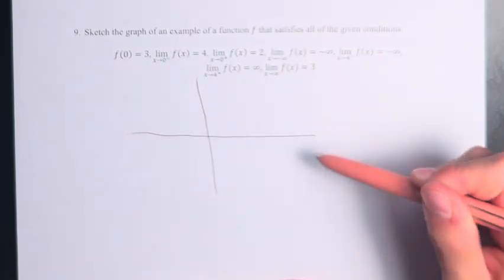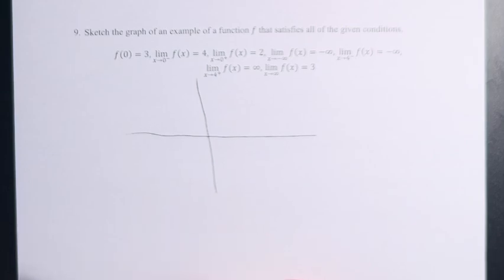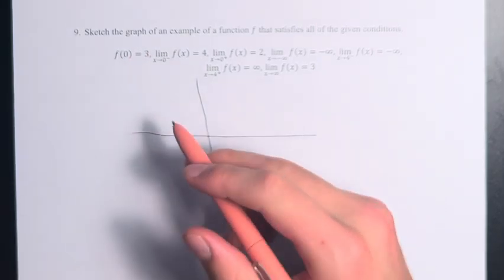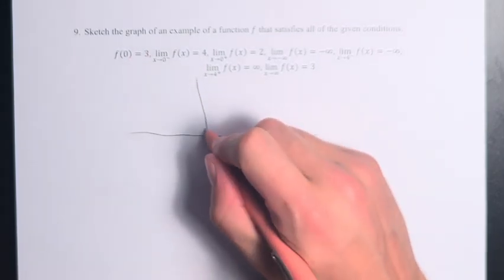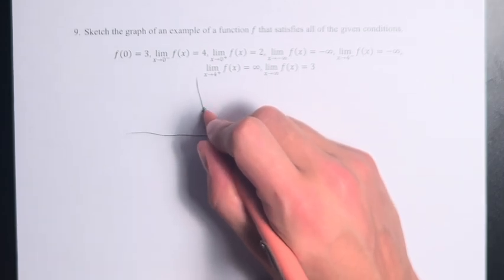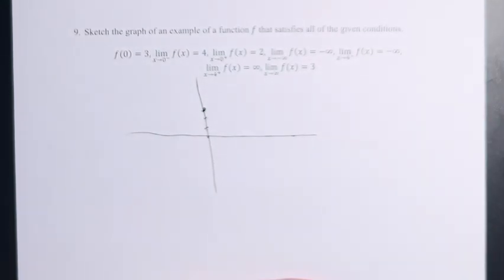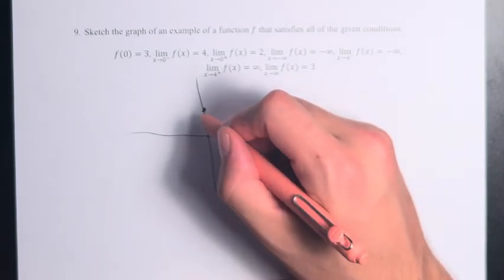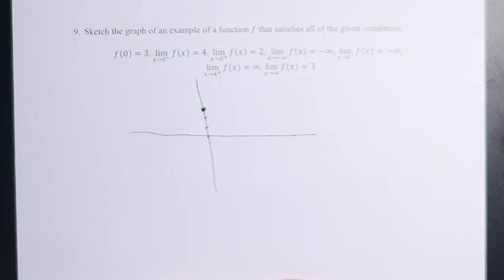So for drawing this in the x-y plane, what we're going to start with is f of 0 equals 3. That means that when x is equal to 0, the value of the function is equal to 3. It doesn't tell us anything about what happens near 0, although we will get to that. We just know at 0, the function is equal to 3.